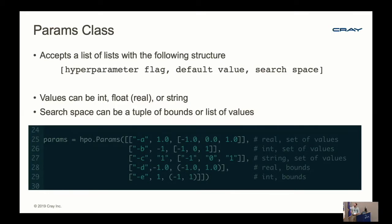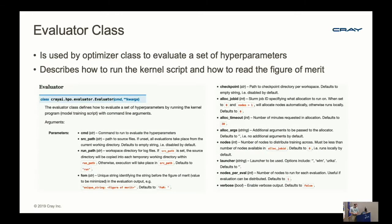A quick note on the Params class: it accepts a list of lists where each list has the hyperparameter flag, default value, and search space. These values can be integer, float, or string, and the search space can be a tuple of bounds or a list of values. For the Evaluator class, there are different types of launchers you can use—the framework interfaces with the launcher directly. You could be using Slurm, PBS, nothing if running on your desktop, or the Eureka launcher. When running distributed, you just set your nodes equal to an amount and Cray AI typically infers the workload manager you're using.